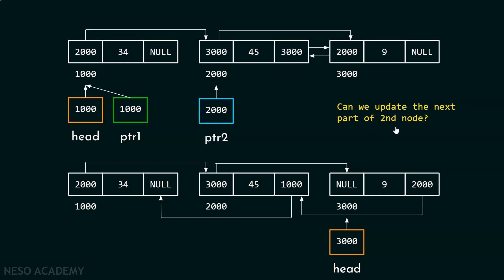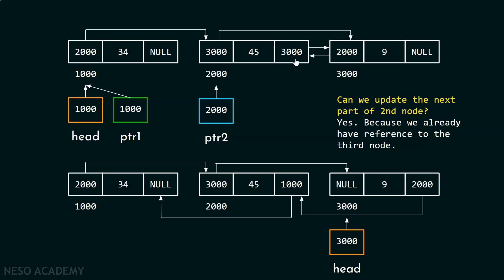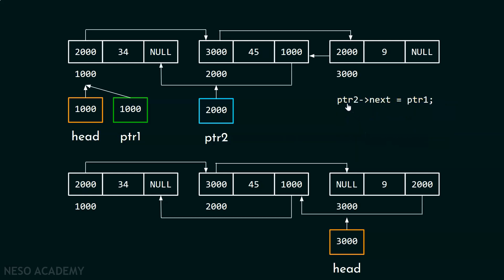Can we update the next part of the second node? Is it not the case that we will lose the reference to the third node? No. We will not lose the reference of the third node because we already have it — the prev part is already holding address 3000. Therefore, we can definitely update the next part of this node using ptr2. We will use the code: ptr2 next equal to ptr1. ptr1 is holding address 1000, so 1000 is placed over here.